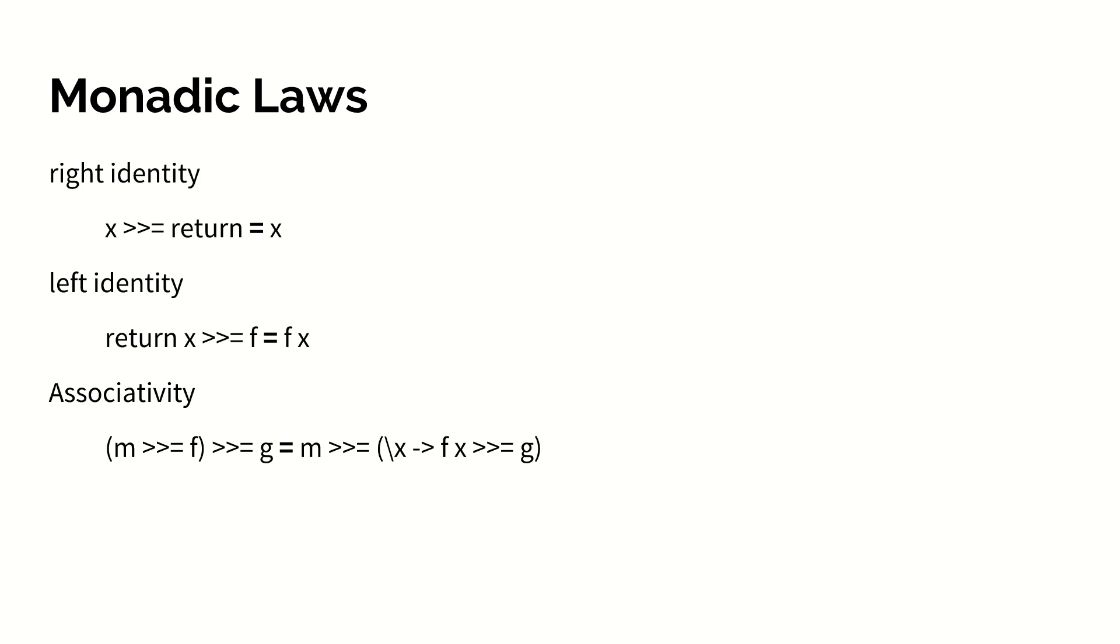Monad has two identity laws. The right identity is essentially expressing that if we have a value in a given structural context and we bind it with return, where return would take it from that context and put it into some new structure, and bind over that return would take that generated structure and reduce it back to the original structure, we would end up with just x.